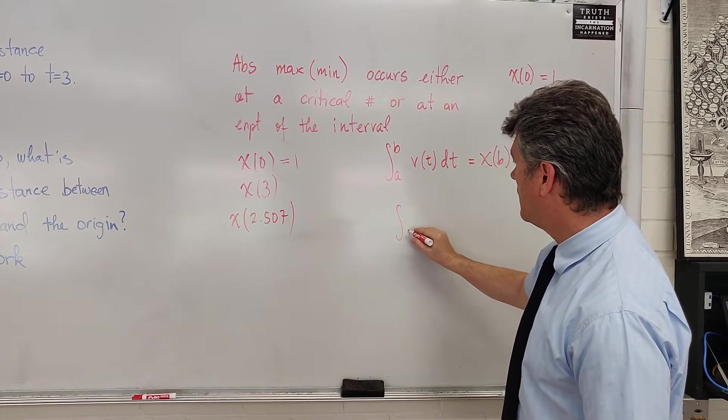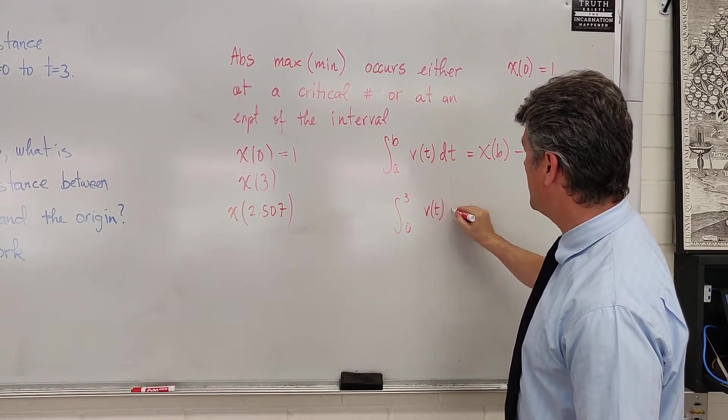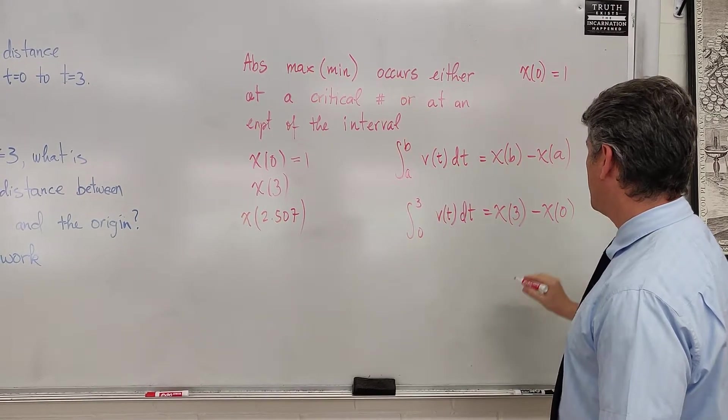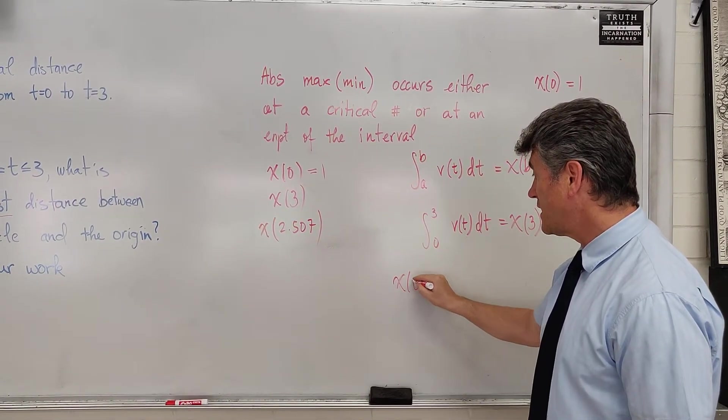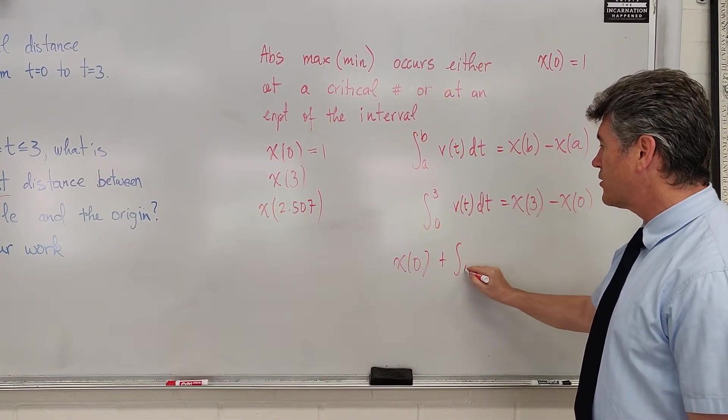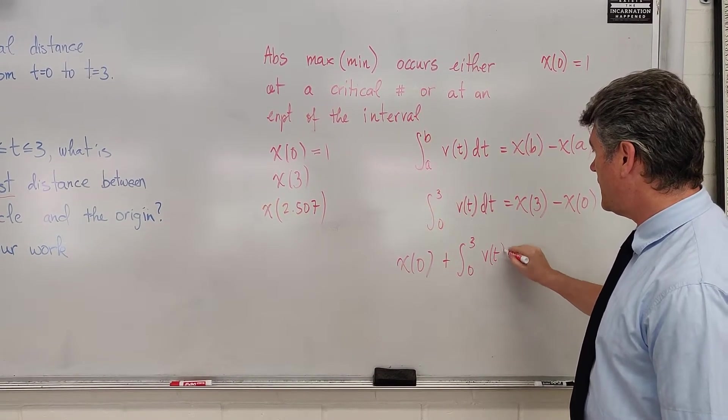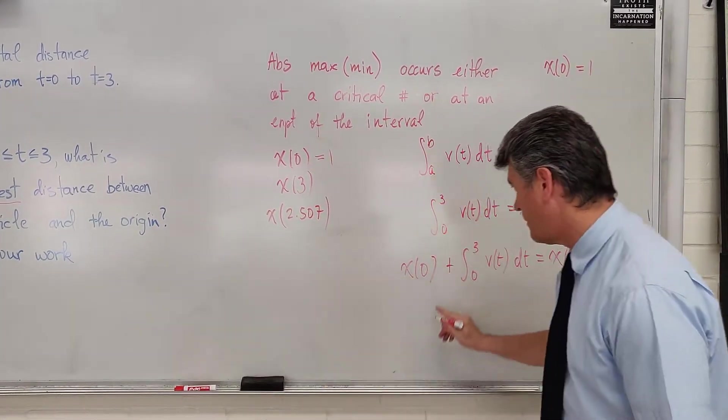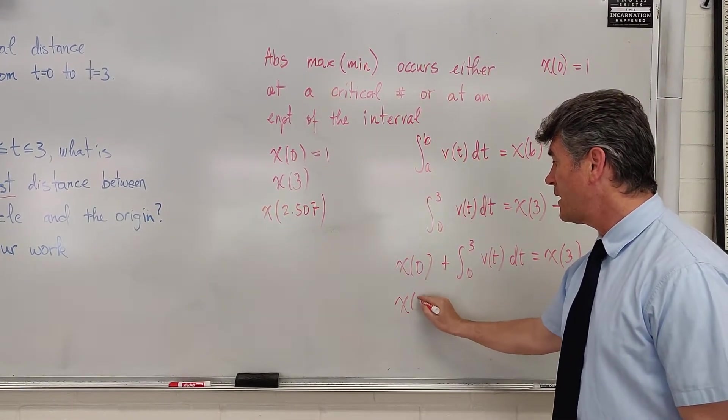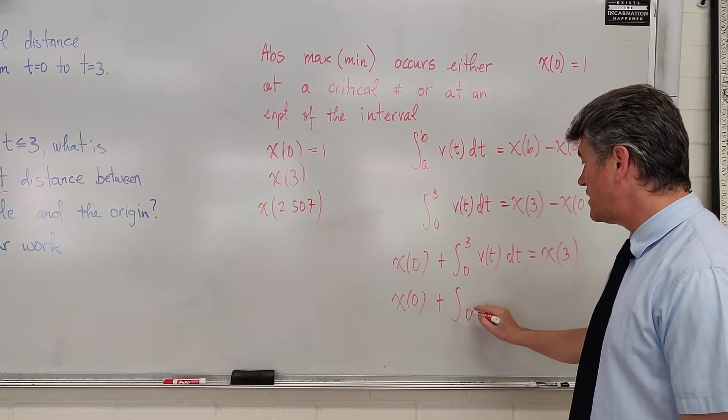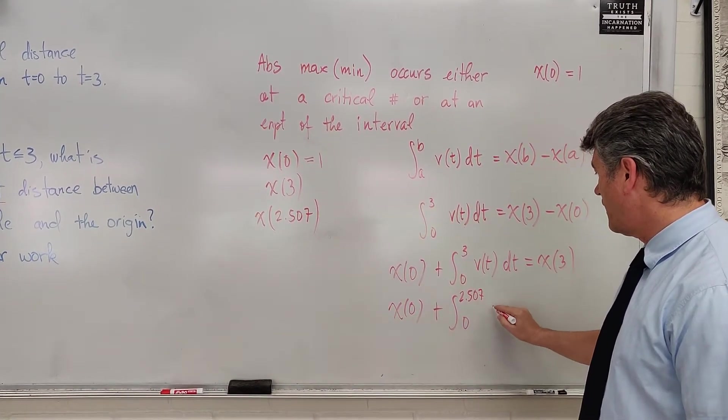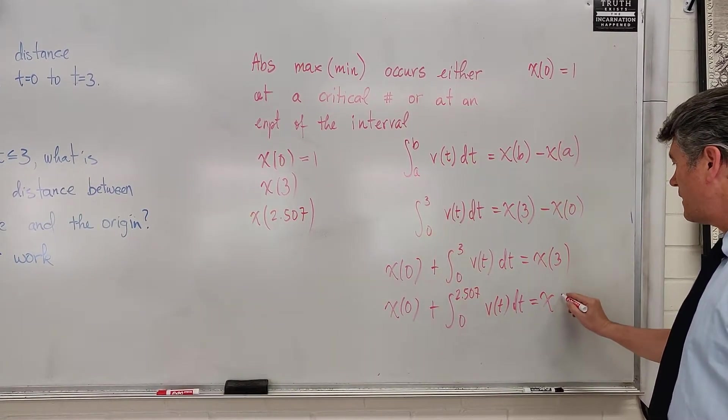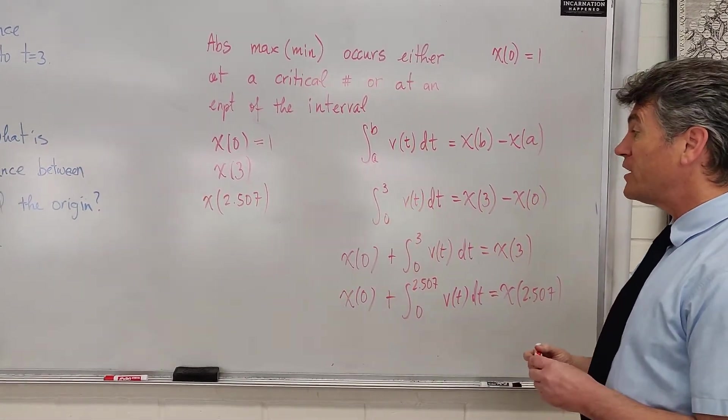The integral from 0 to 3 of v of t dt is equal to x of 3 minus x of 0. So I'm going to add x of 0 to both sides. x of 0 plus the integral from 0 to 3 of v of t dt is going to be equal to x of 3. And similarly, x of 0 plus the integral from 0 to 2.507 of v of t dt is equal to x of 2.507.